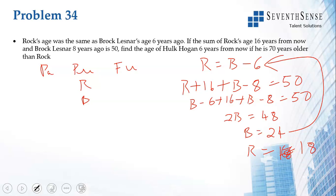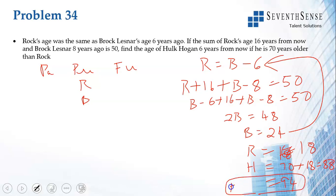Hulk Hogan is 70 years older than Rock. Rock is currently 18, so Hulk Hogan is currently 88. Six years from now, Hulk Hogan will be 94.